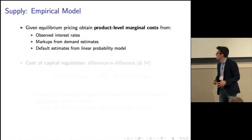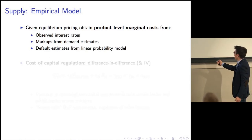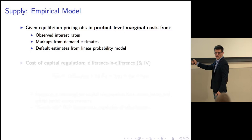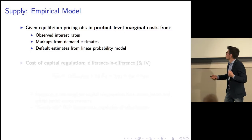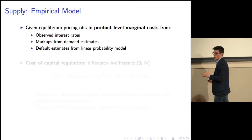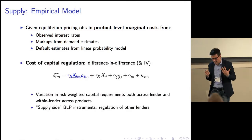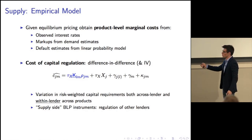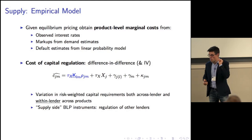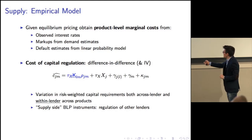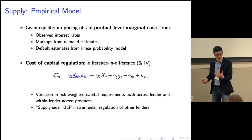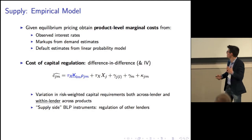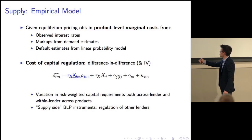What we get out of this is the following: I recover a product-level marginal cost that I don't observe — I back it out from the observed interest rate, the markup from the demand model, and a default estimate from a linear probability model. I then identify the cost of capital regulation through a regression where the dependent variable is the estimated marginal cost at the product level and the explanatory variable is the capital requirement, which varies both across lenders and within a lender across products.